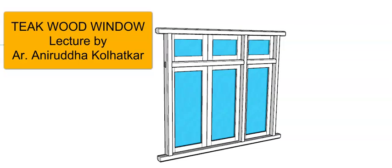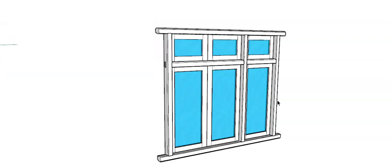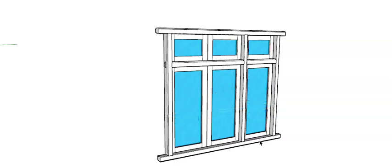Welcome to another video lecture from Architects Academy. Today we are going to learn about Tikkun windows. Here in front of you is a model of a Tikkun window. This window has a width of 1.8 meters and a height of 1.6 meters.